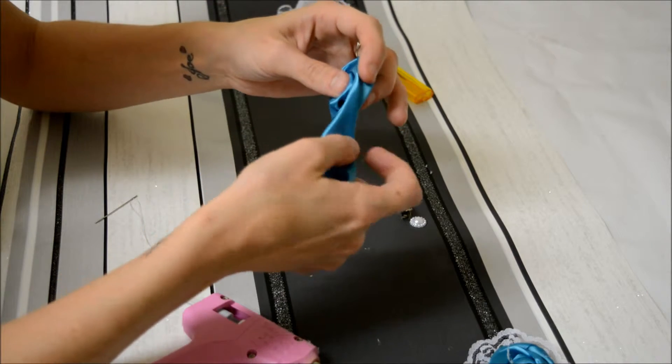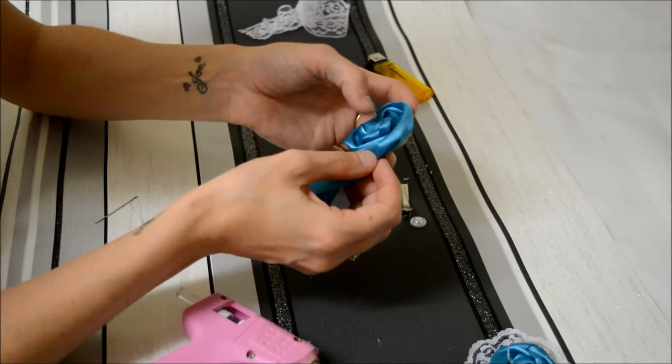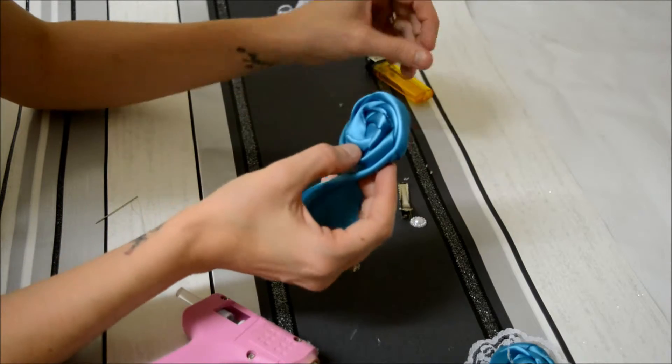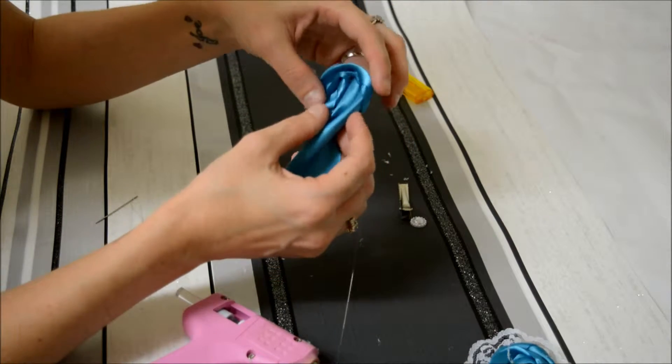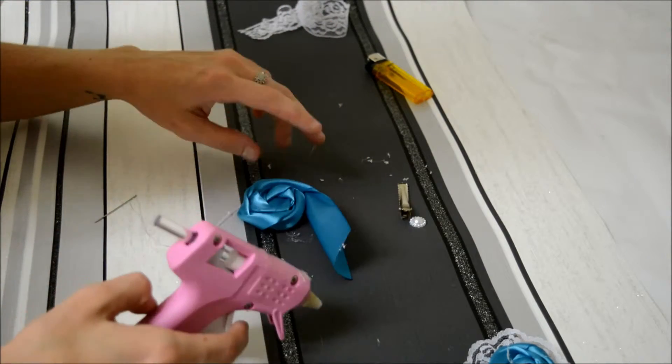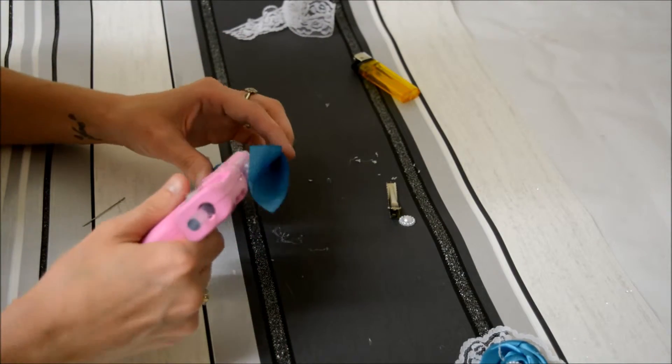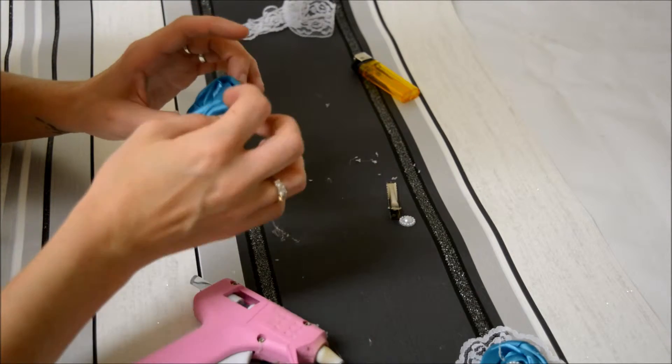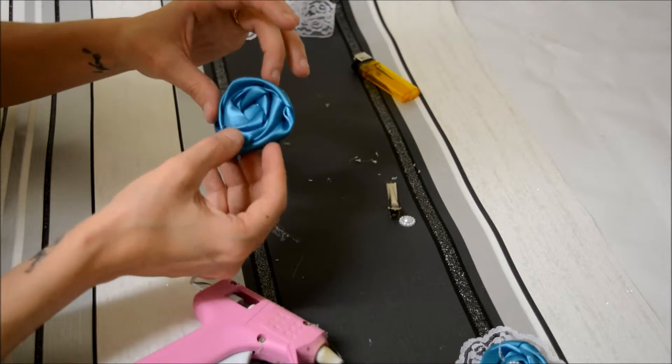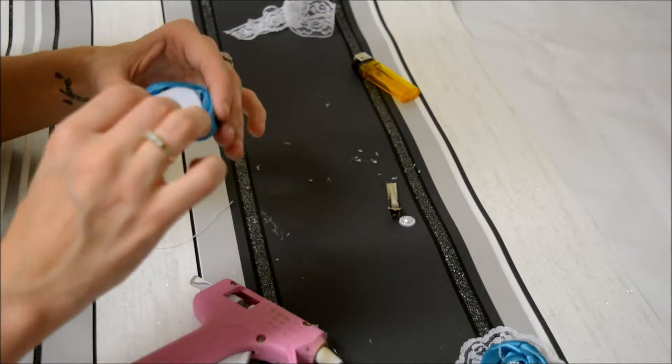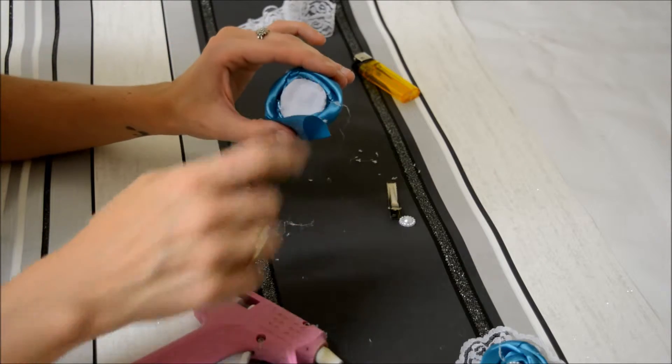When you do get to the end or when you cut some ribbon off, just make sure that you leave enough to push around to the back. I'll show you that shortly. Now I'm going to take this bit and glue that down to the back.